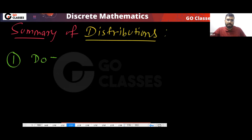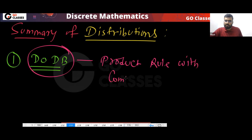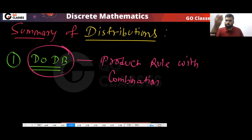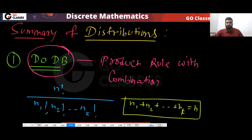The first thing we have seen is DODB. For DODB, which approach will you apply? You will apply the simple product rule with combination. Remember, this approach you should apply — product rule with combination. These two things you apply. You don't have to apply any formula, but if you want, there is a formula: N1 factorial, N2 factorial, NK factorial. But there is a condition you need to take care of.